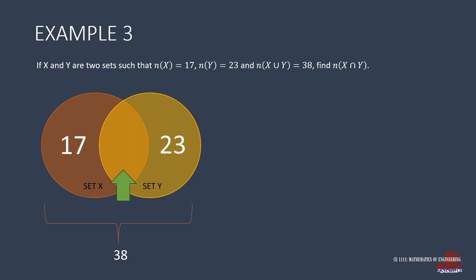Use the identity of union as equal to the number of elements in each set minus the number of elements of their intersection. The number of X is 17, Y has 23 elements, and both contain 38 elements. Place them all together in the identity, giving 38 as equal to 17 plus 23 minus n(X ∩ Y). Isolate the required to get 17 plus 23 minus 38, which can be simplified as 2.